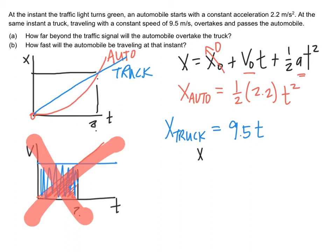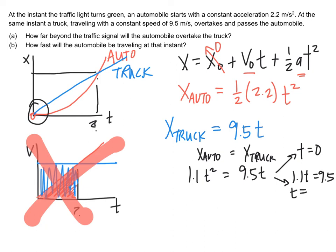And I would set them equal to each other at this particular moment. And I'm trying to find when the auto passes the truck. So that means 1.1t squared is equal to 9.5t. There's actually two solutions to this. One is that t could be zero. That would make this a true statement. But that doesn't really tell me much. That's just referring to this initial moment when they were both at the green light. So what I want to do is divide through by t and then say that 1.1t is equal to 9.5. And so the magic happens when the time is 8.64 seconds.